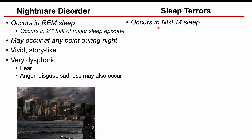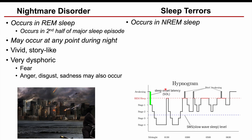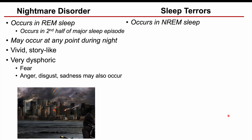With regards to sleep terrors, they occur in NREM sleep — slow-wave sleep or deep sleep. We go into stage 1, 2, 3, 4, where stage 3 and 4 are slow-wave or deep sleep, and this is where we're going to see sleep terrors occurring. Later on in the night, more of the sleep stages become dominated by REM sleep, and less slow-wave sleep takes place. This is why sleep terrors are more likely to occur in the first third of the night, usually the first 90 minutes of sleep.